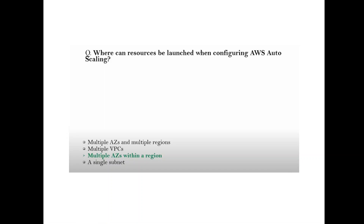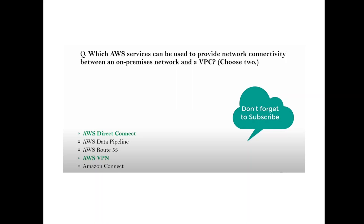Question: Where can resources be launched when configuring Auto Scaling in multiple Availability Zones? Answer: Within a region, across multiple Availability Zones. Question: Which AWS service can be used to provide network connectivity between an on-premises network and a VPC? Answer: AWS Direct Connect or VPN.